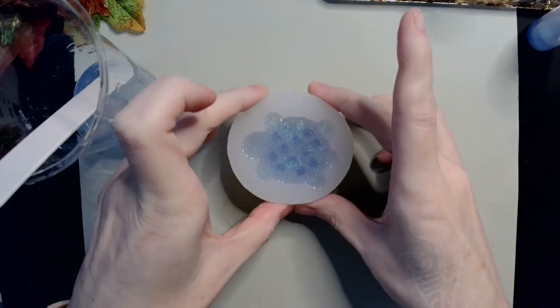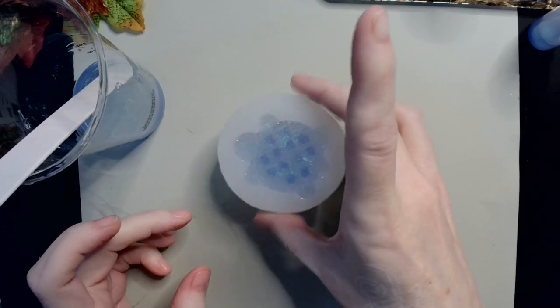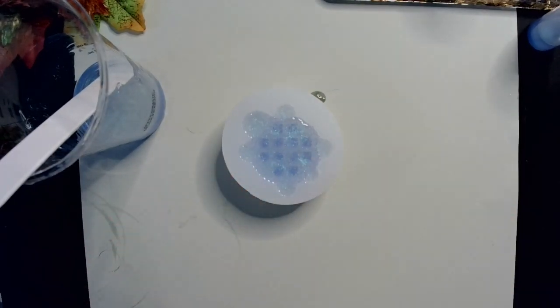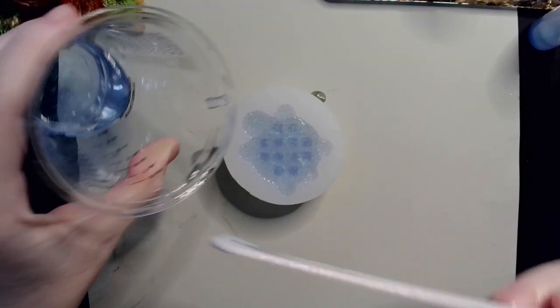So I don't want to do that. So I'm just going to give it a tap, a bit of a squish, but I don't want to squish too much because I don't want to dislodge those UV resin niblets.